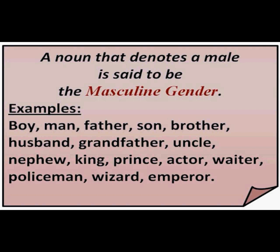A noun that denotes a male is said to be of the masculine gender. Can you read the examples? Boy, man, father, son, brother, husband, grandfather, uncle, nephew, king, prince, actor, waiter, policeman, wizard, emperor — all these nouns refer to a male. It denotes a male, so it is called masculine gender.